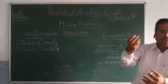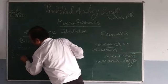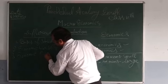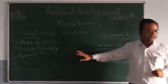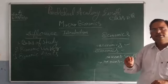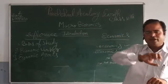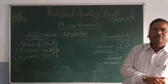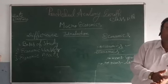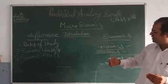The third difference is economic agents — the persons, people, and institutions taking part in economic activities. When we talk about microeconomics, the agents are individuals and households. But when we talk about macroeconomics, the agents are institutions like SEBI (Securities and Exchange Board of India), TRAI (Telecom Regulatory Authority of India), and RBI. These institutions are the economic agents in macroeconomics.